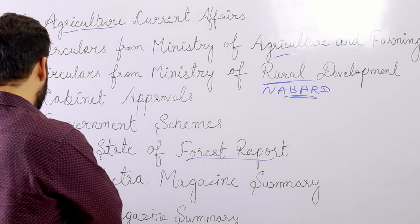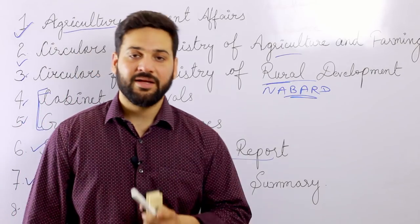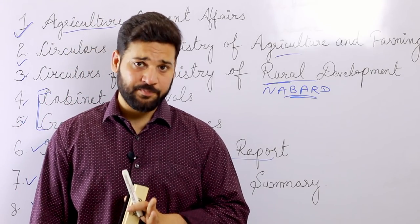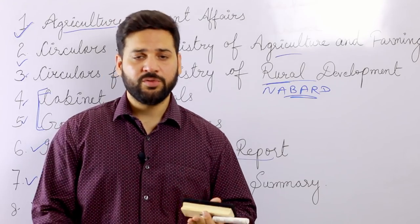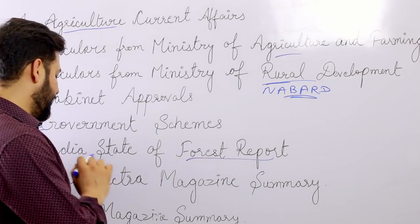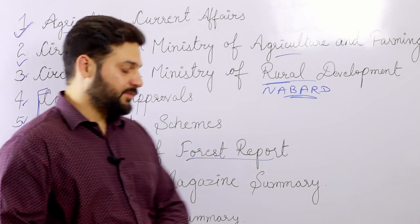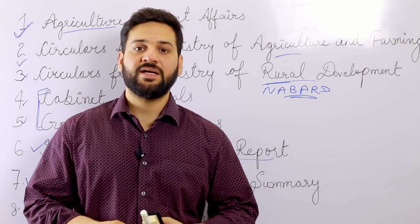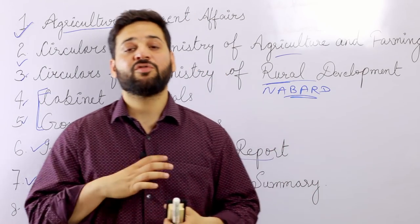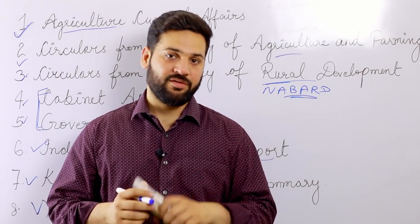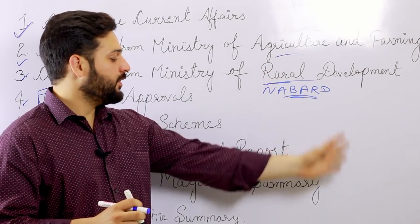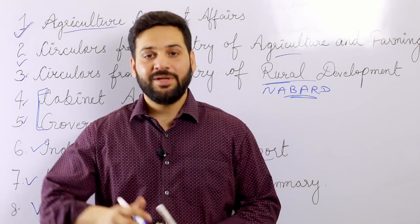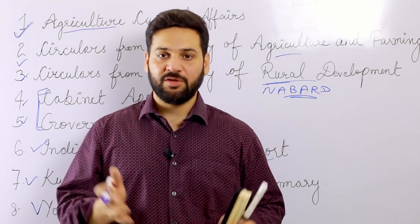We also cover all forest reports and all reports related to agriculture. Additionally, we do the analysis of Kurukshetra and Yojana magazines for NABARD Grade A. Kurukshetra magazine is really important, students. Every month we do the analysis of Kurukshetra and Yojana magazines. In the March edition we did the analysis of the Union Budget, and we also do the analysis of the Economic Survey. All these topics are available in our monthly capsule — please check the description.